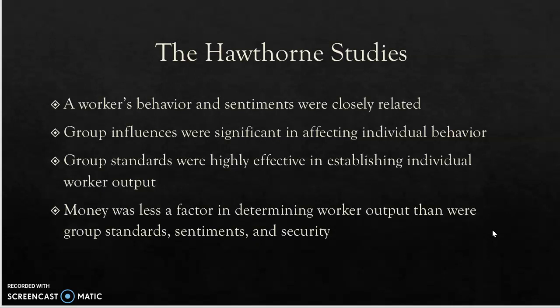Then they wanted to see: if group sentiment, group status, and group norms are driving worker output, what if we try other things to incentivize output — like wages? That was the bank wiring experiment. What they found was that group norms, group behavior, and group status were more impactful on worker output than wages. Money was less a factor in determining worker output than group standards, group sentiments, group security, and group norms. These were major findings within the Hawthorne study and really formed the foundation of what we will continue to talk about as we discuss groups.